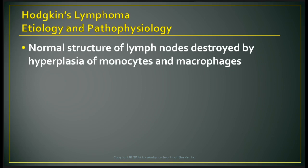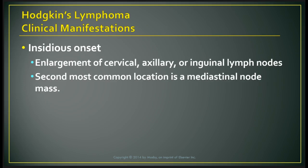The main diagnostic feature of Hodgkin's lymphoma is the presence of Reed-Sternberg cells in lymph node biopsy specimens. When the disease begins above the diaphragm, it remains confined to lymph nodes for a variable time. When it begins below the diaphragm, it spreads to extra-lymphoid sites such as the liver. It has an insidious onset with enlargement of cervical, axillary, or inguinal lymph nodes. The second most common location is a mediastinal node mass, often found initially on PET scans.